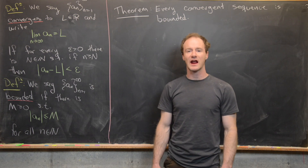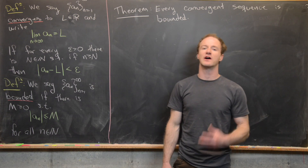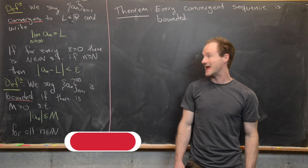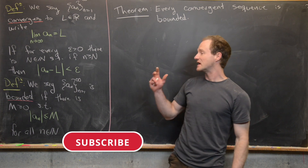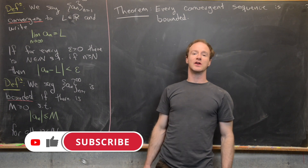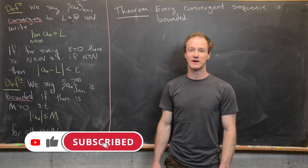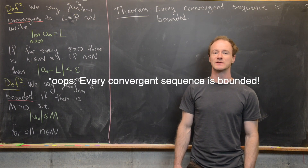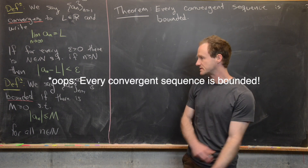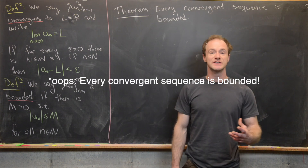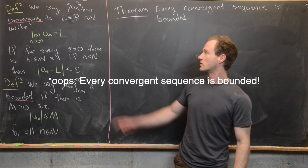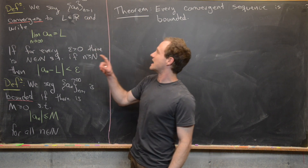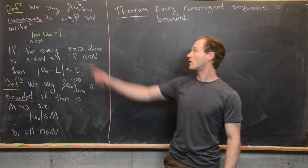Previously, we looked at the careful definition of a convergent sequence in terms of epsilon and N. Today we want to look at the notion of a bounded sequence and also prove that every bounded sequence is convergent. So let's recall what it means for a sequence to converge. We say that a sequence a_n converges to a number L, which is a real number.